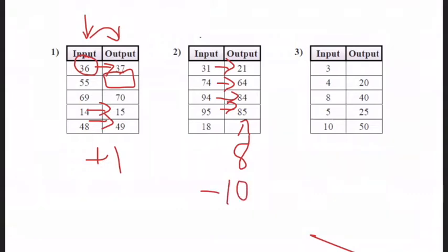All right, next one. I don't have anything for the first. So if I look at the next, I go 4 to 20, 8 to 40, 5 to 25, 10 to 50. And you're going up and you're not adding, you're multiplying. So we're multiplying by 5. And this answer is 15.